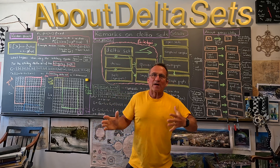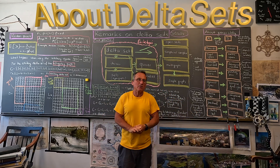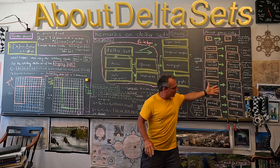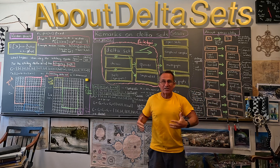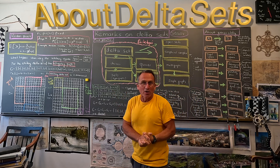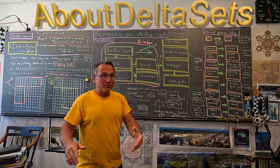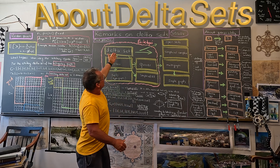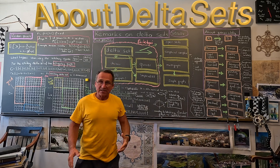What is the most general finite geometric structure we can think of? Mirror, mirror on the wall, what is the most general finite geometric structure of them all? I argue that it's the structure of a delta set.